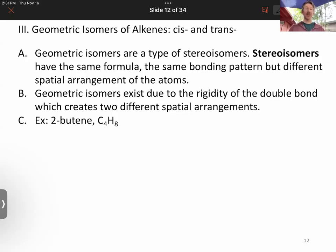We're going to talk about two kinds of stereoisomers, and the first one is geometric isomers. Stereoisomers have the same formula, the same bonding pattern, but different spatial arrangement of the atoms. The geometric isomers are going to be called cis and trans isomers. They exist because of the rigidity of the double bond, which creates two different spatial arrangements.